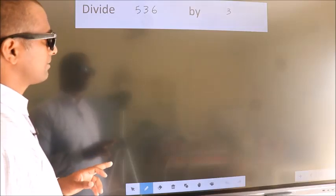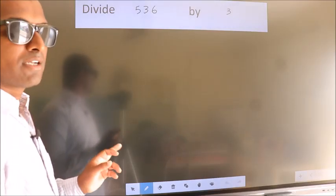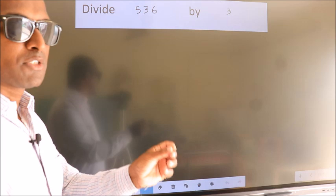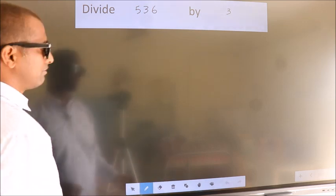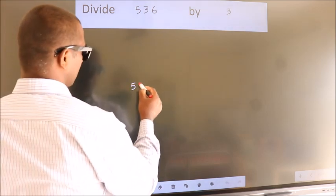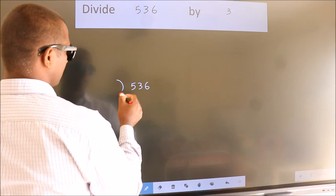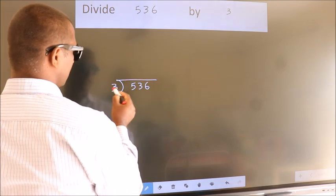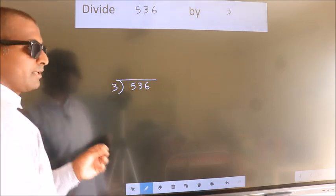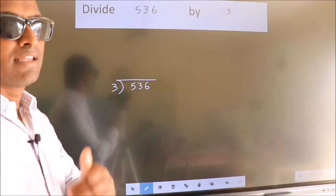Divide 536 by 3. To do this division, we should frame it in this way: 536 here, 3 here. This is your step 1.